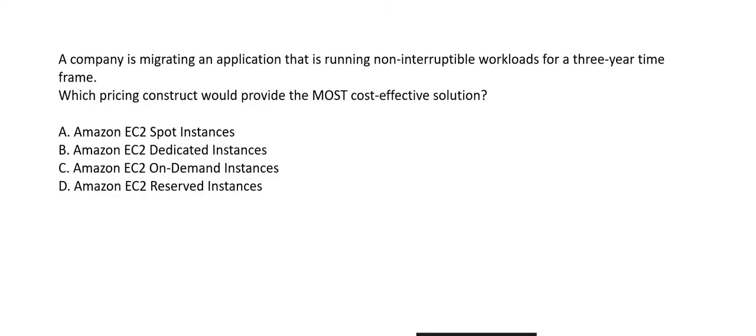Eighth question: a company is migrating an application with non-interruptable workloads running 24/7 for three years — which pricing is most cost-effective? Spot instances save up to 90% but interrupt workloads when you lose the bid — wrong. EC2 Dedicated Instances are excellent for non-interruptable workloads with the entire instance dedicated, but they are the most expensive option — also wrong.